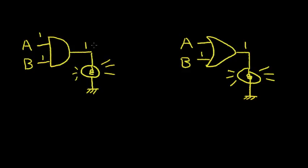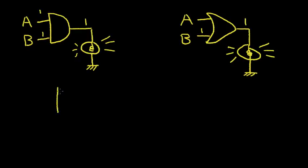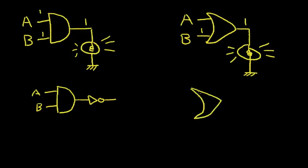In CMOS, we can generate the AND function and the OR function. But it's more simple to generate what we call the NAND function and the NOR function — it requires fewer transistors to generate those functions. If we take this AND function with input A and input B and add an inverter to the output, we end up with what is called a NAND gate. To make a NOR gate, we do a similar thing with the OR symbol — we take the A input, B input, and again add an inverter. We invert the output signal and this is called a NOR gate.